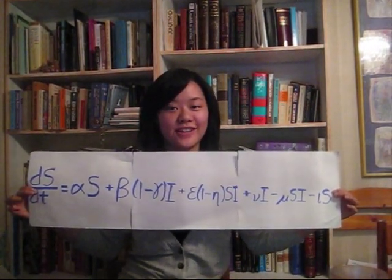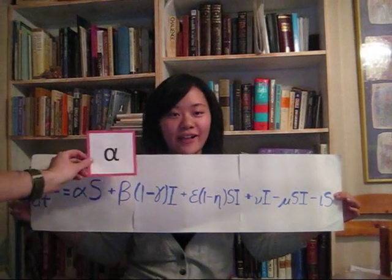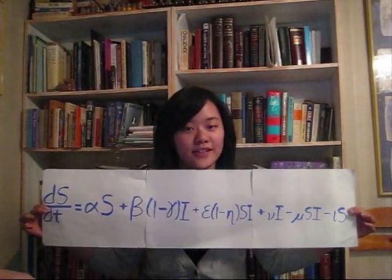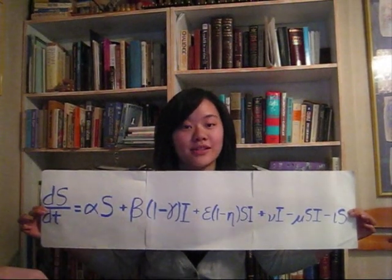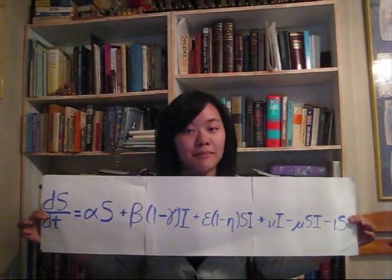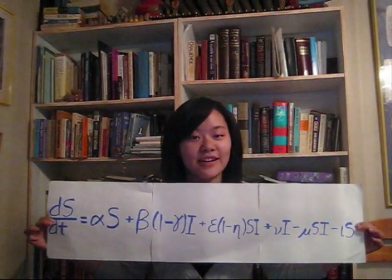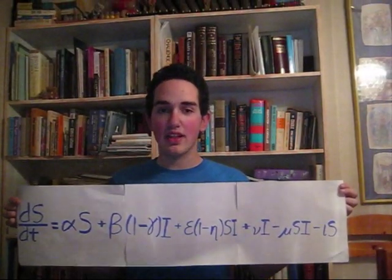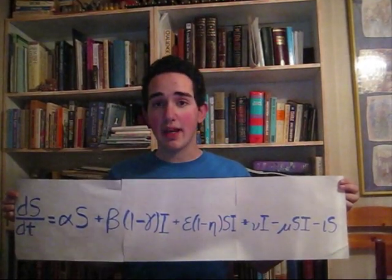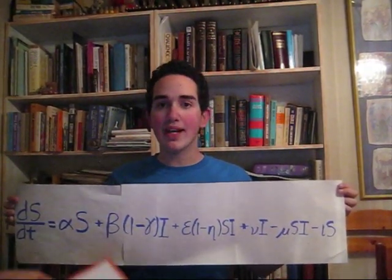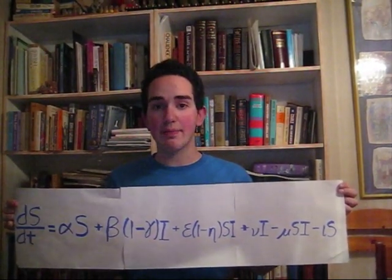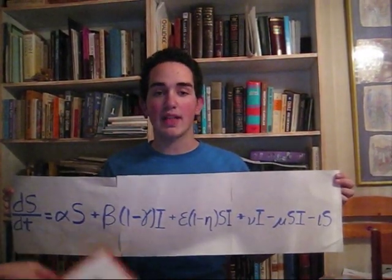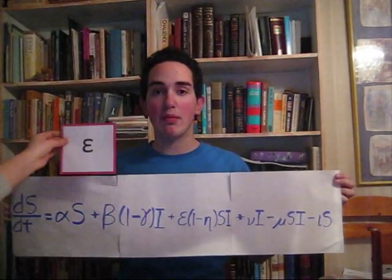DS by DT refers to the rate of change of people in the Susceptible category. Alpha S shows the birth rate of susceptibles. Gamma is the chance that the child of an infected is born infected. Thus, one minus gamma is the chance that it will be born susceptible. So if we multiply a birth rate beta by one minus gamma and the number of infected, we see the amount of susceptibles born from infected parents. Very similarly, eta is the chance that one susceptible and one infected parent will have an infected child. So one minus eta is the chance that a susceptible will be born. Epsilon is the chance of pregnancy resulting from sexual behavior between an infected and a susceptible. When one minus eta and epsilon are multiplied by both the number of susceptibles and infected, the number of susceptibles born to one susceptible and one infected parent is given.